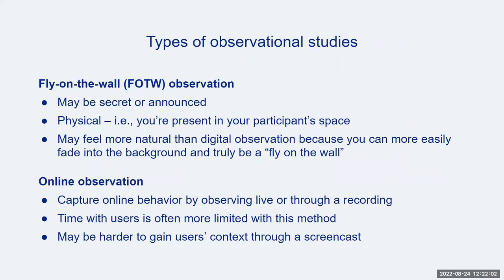There are several different kinds of observational methods. For the purposes of this module, we'll discuss two: fly-on-the-wall observations, which typically happen synchronously in physical spaces, and online observations, which happen online either synchronously or asynchronously through a web recording that you review at a later point.